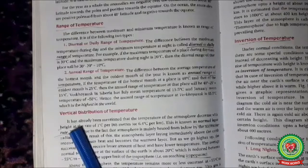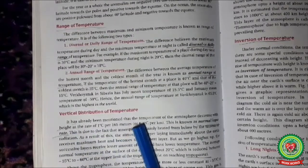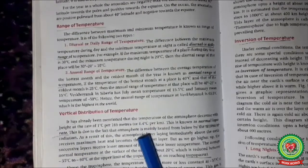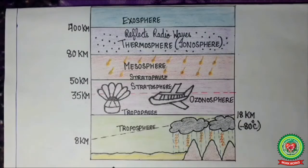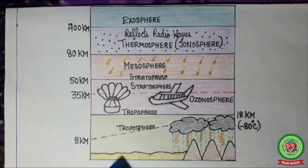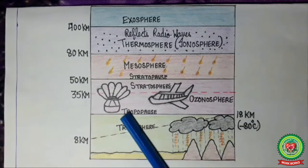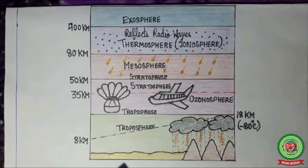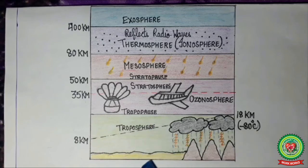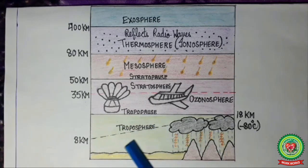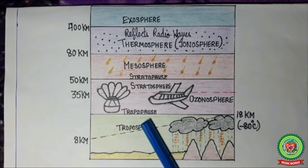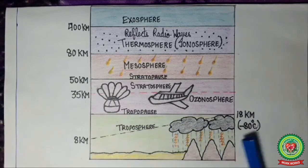The next topic is vertical distribution of temperature. Let us discuss this with the help of a diagram. In the atmosphere, as we go higher, the temperature decreases. After every 165 meters of height, the temperature decreases by 1 degree Celsius in the troposphere. As we reach the tropopause, which is the uppermost limit of the troposphere, the temperature decreases up to minus 80 degrees Celsius.